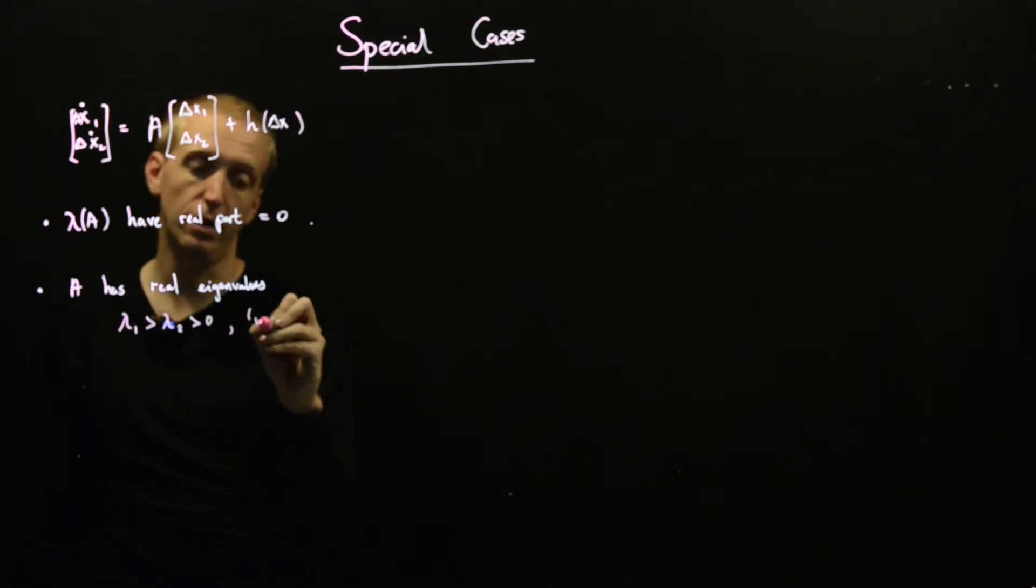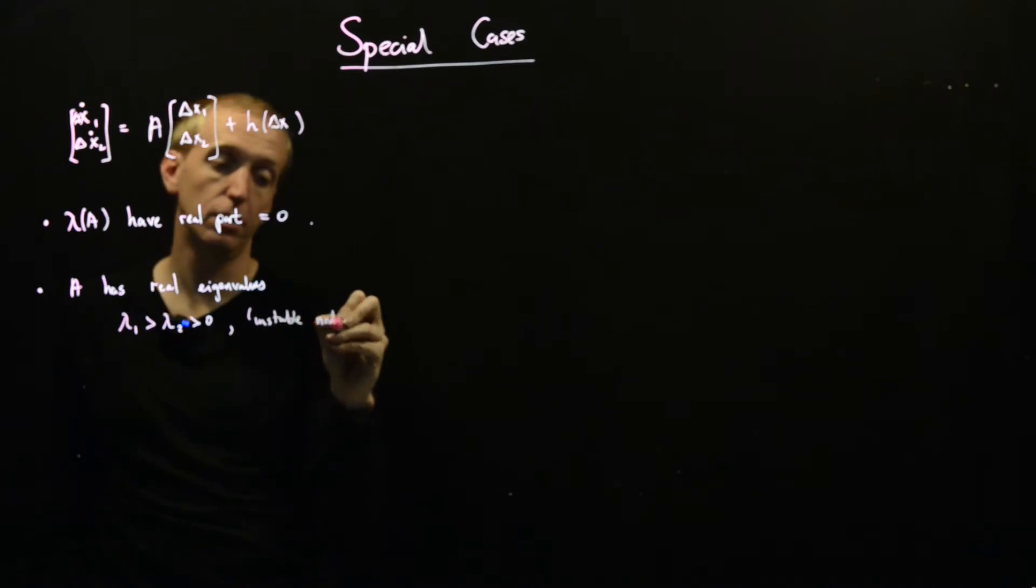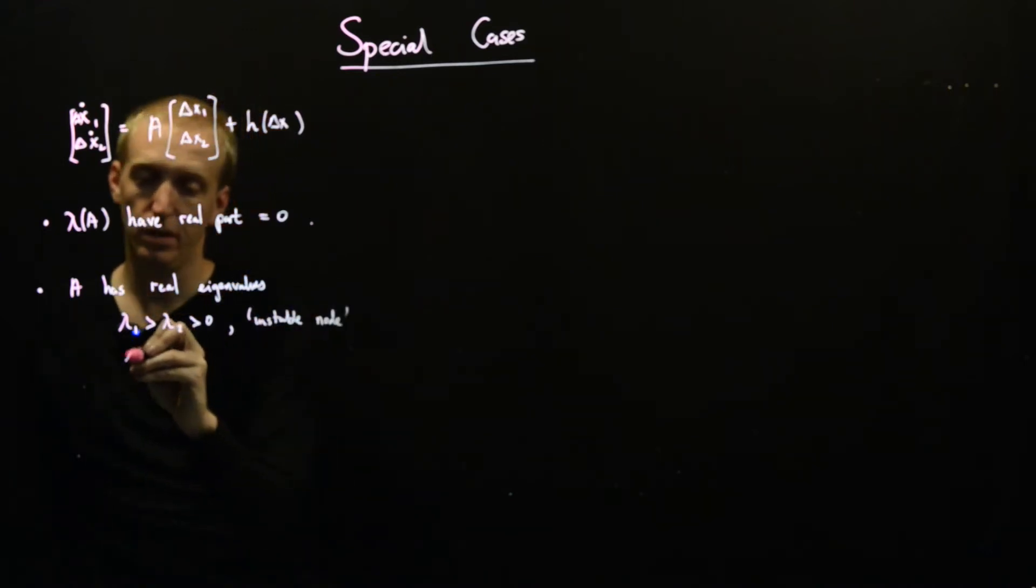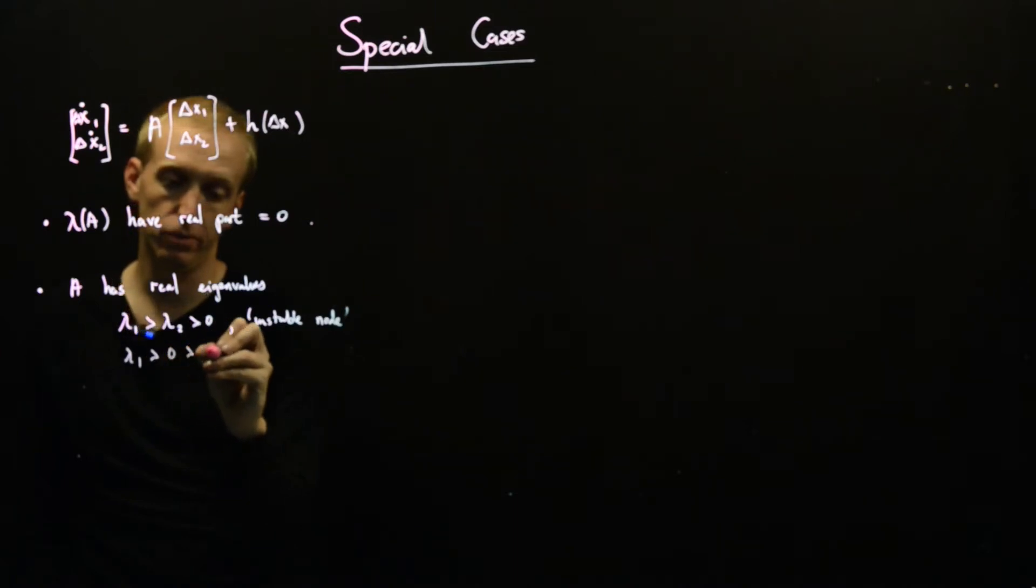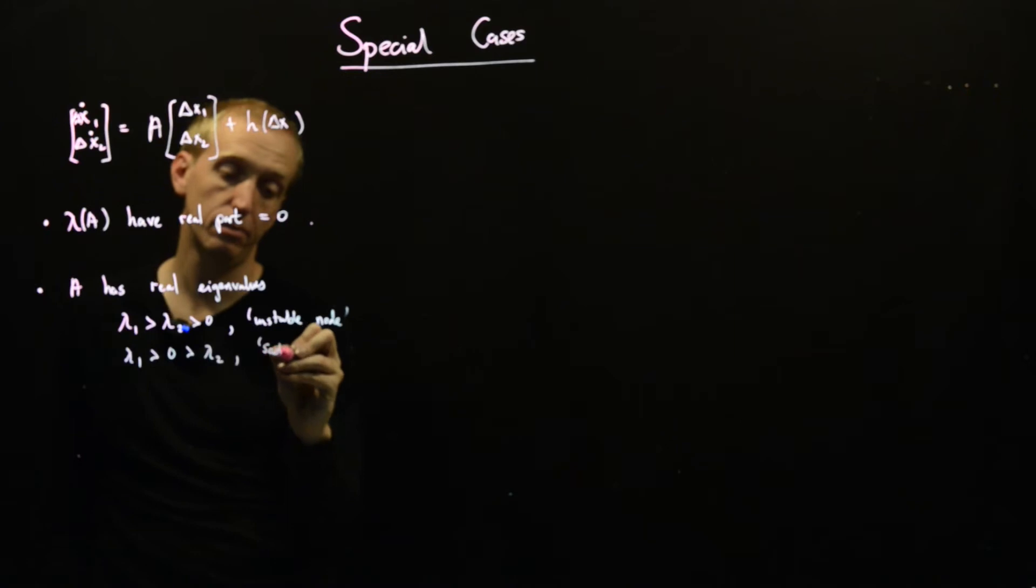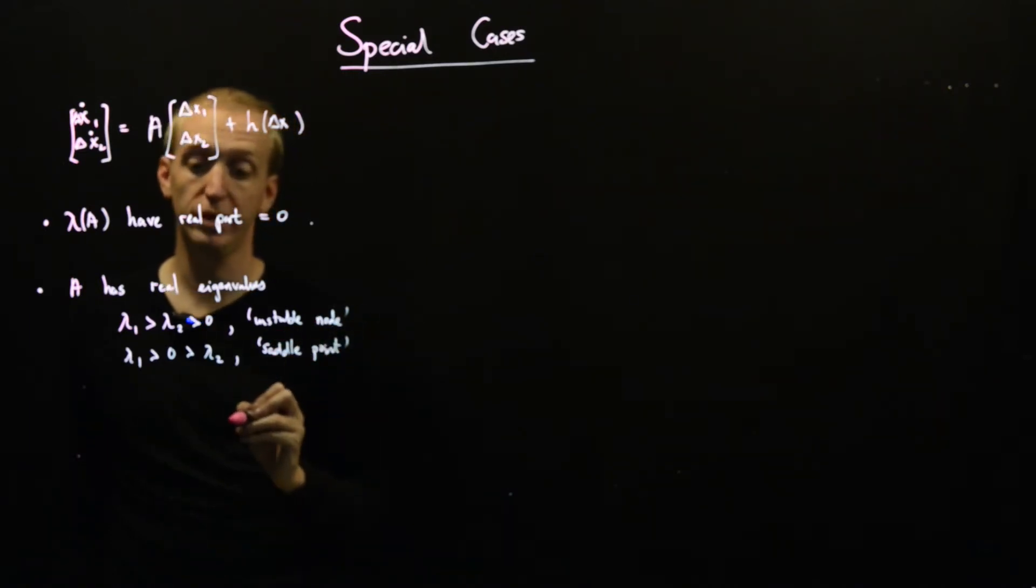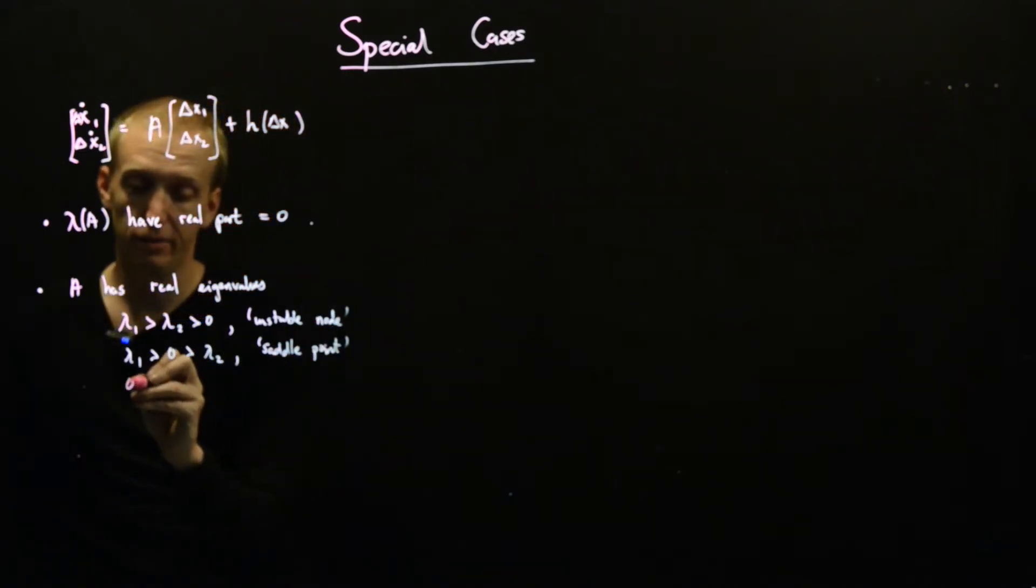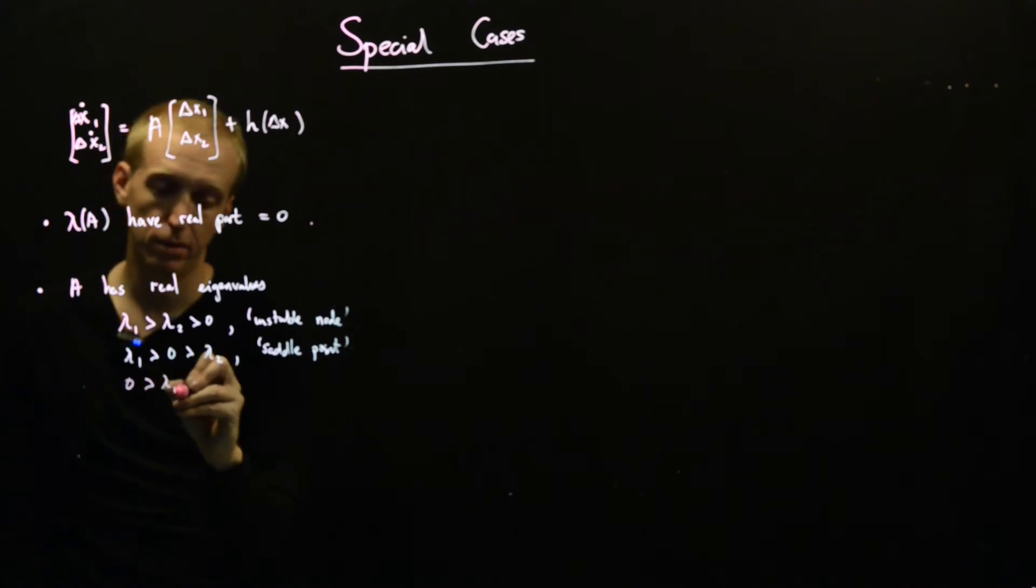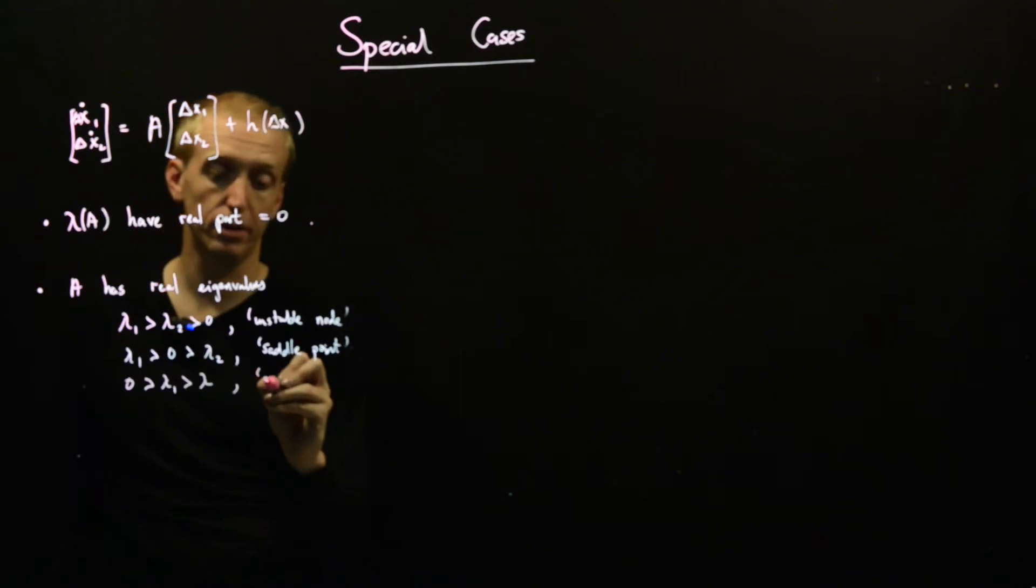So if lambda 1 was bigger than lambda 2 was bigger than 0, we got an unstable node. If lambda 1 is bigger than 0 bigger than lambda 2, we got a saddle point. And this was also a type of unstable equilibrium point. And then in the final case, both smaller than 0, we got a stable node.